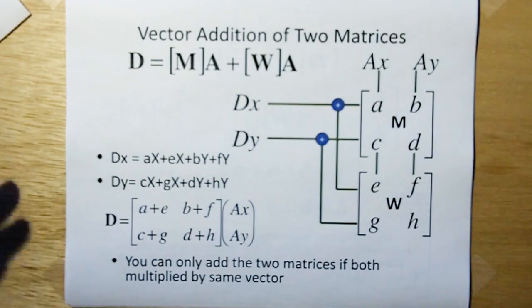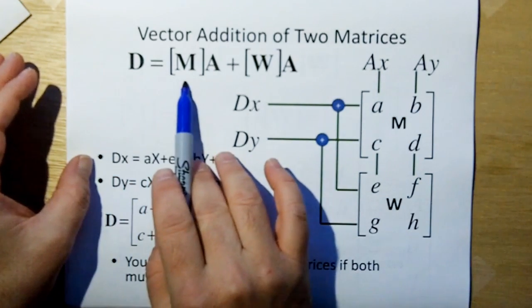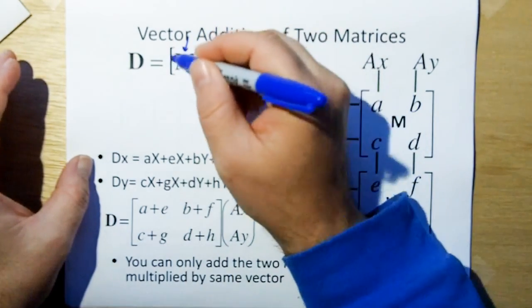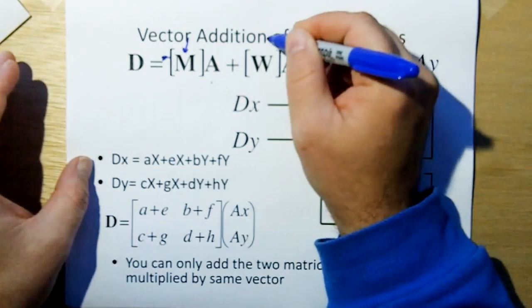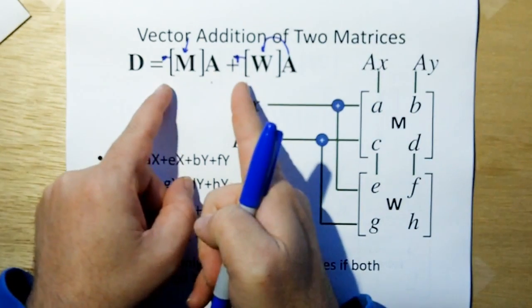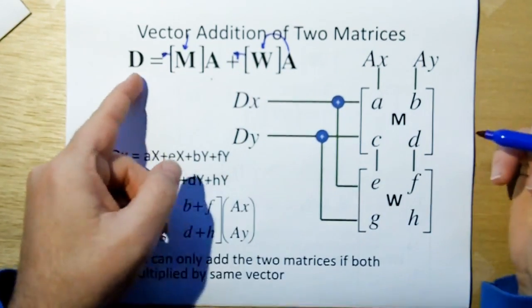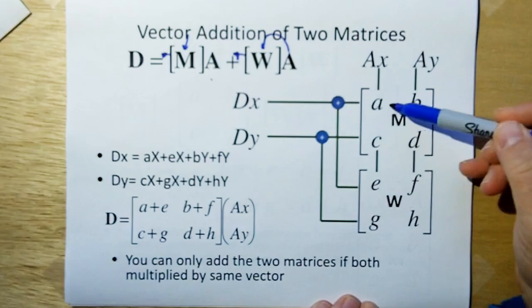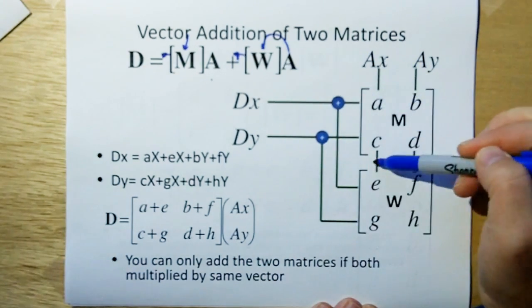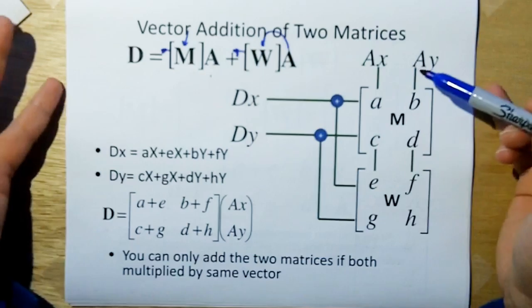When we do matrix addition, we're not really adding the matrices. What we're saying is our resultant vector D is the first matrix M multiplied by A plus—because this A is going in the top and it's coming out the right as a vector—this A is going in the top of this matrix and it's coming out the left as a vector.